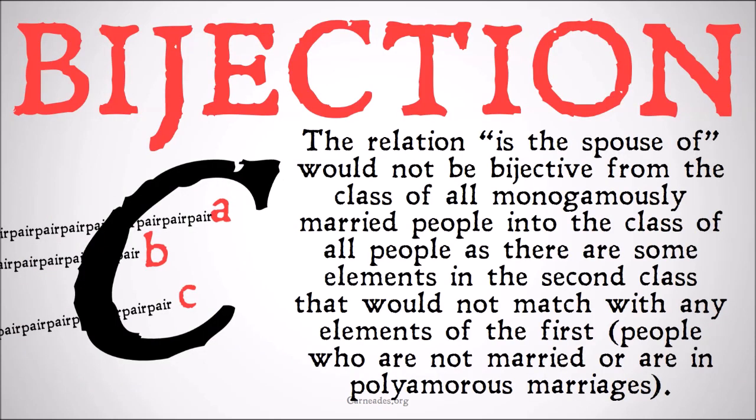The relation 'is the spouse of' would not be bijective from the class of all monogamously married people into the class of all people, for a couple of reasons — as there are some elements in the second class which would not match with any elements in the first: people who are not married at all, or people who are in polygamous marriages.